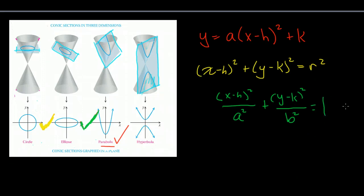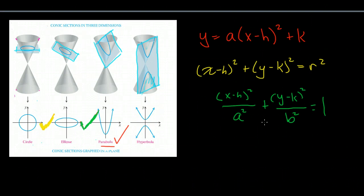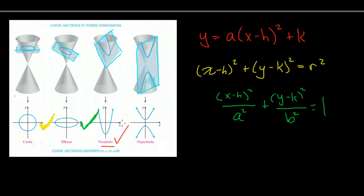So those are three of the conic sections. Notice that all of them involve a positive x squared and a positive y squared. And I wanted to highlight that because that's the major difference between these three conic sections and our final one that we're going to take a look at, the hyperbola.